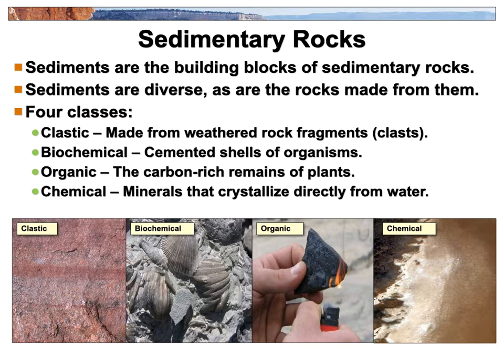The next group is organic sedimentary rocks. Coal is a rock — it's the buried plant remains of ancient trees that fell into swamps, got buried, and eventually turned to rock. Bituminous coal is pretty soft stuff for the most part. Organic sedimentary rocks are really similar to the biochemical ones; for all intents and purposes, we might just lump them together as the ones that came from living creatures cemented together.